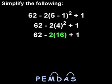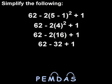Next comes multiplication and division. So we multiply 2 times 16 to get 32, and we have 62 minus 32 plus 1.